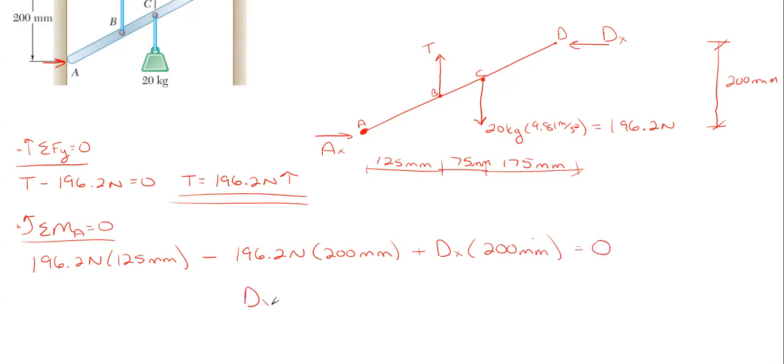D_X is our only unknown here, so we can rearrange and solve. It'll be 73.6 newtons rounded to the nearest point, and that would be acting to the left.